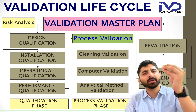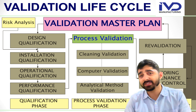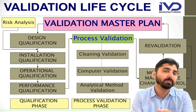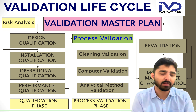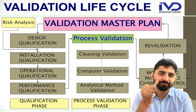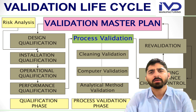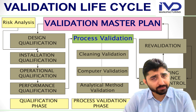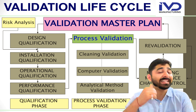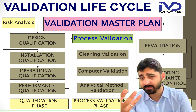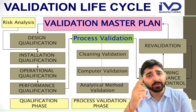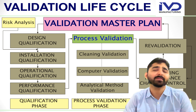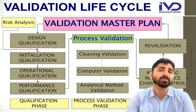Now what happens? After completing IQ and OQ/PQ, I use the machine in the process by deploying the remaining resources apart from the equipment — that is man, method, and material. In the process validation phase, I need to perform three types of validation. The first is cleaning validation, which comes under ISO clean room class. The second is computer validation, if I am using a computer for my chemical processes. The third is analytical method validation, which belongs to the quality control department.